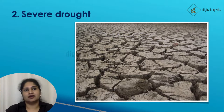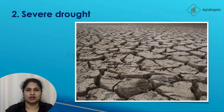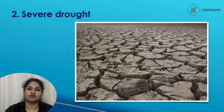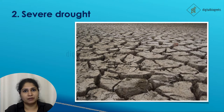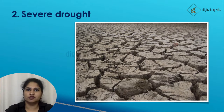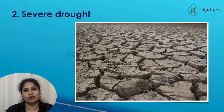Another reason is severe drought. Water is an important constituent for the growth of plants and trees. If water is not available, eventually the plants and trees will die, which will lead to deforestation.